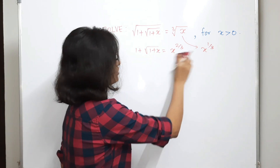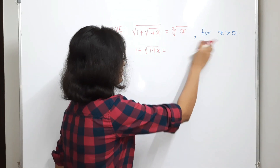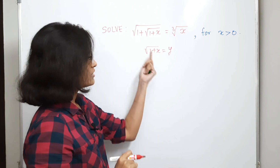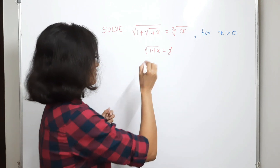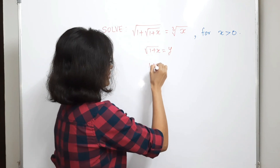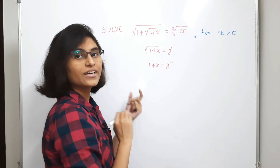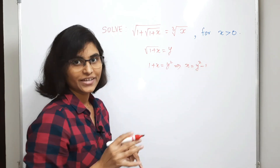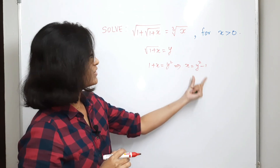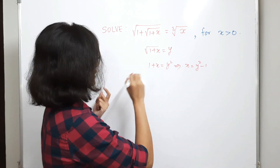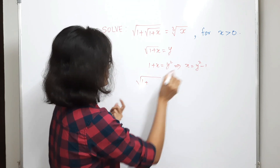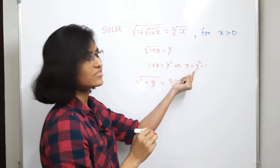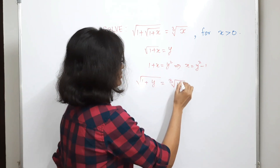We can put the square root of 1 plus x as y, some variable. Then squaring both sides gives 1 plus x equals y squared, which means x equals y squared minus 1. Now we put this value of x into the original equation, so we get: square root of 1 plus y equals cube root of y squared minus 1.